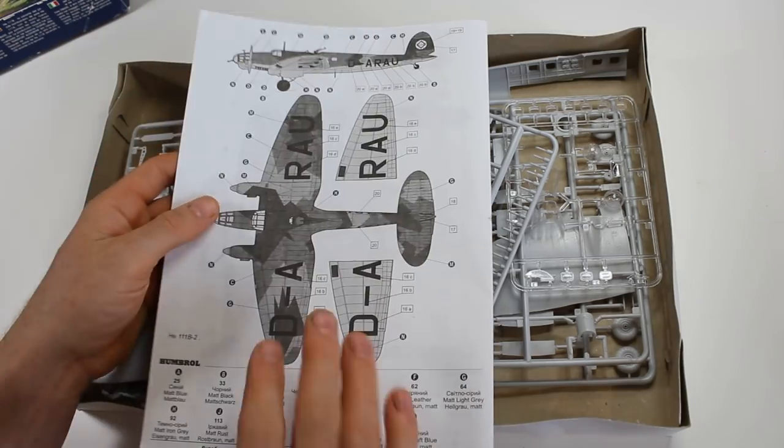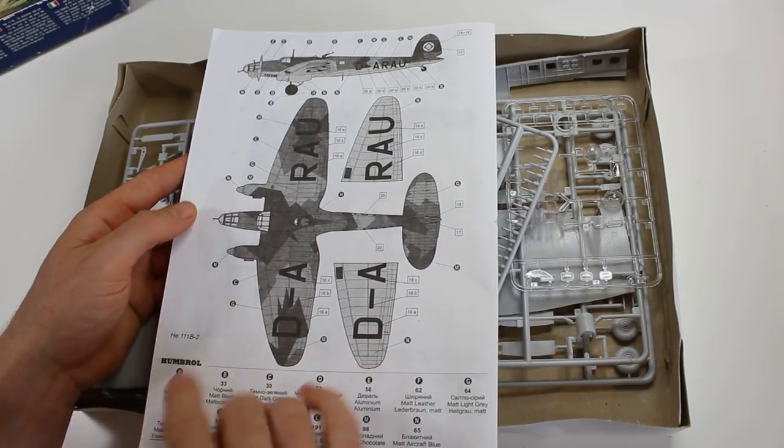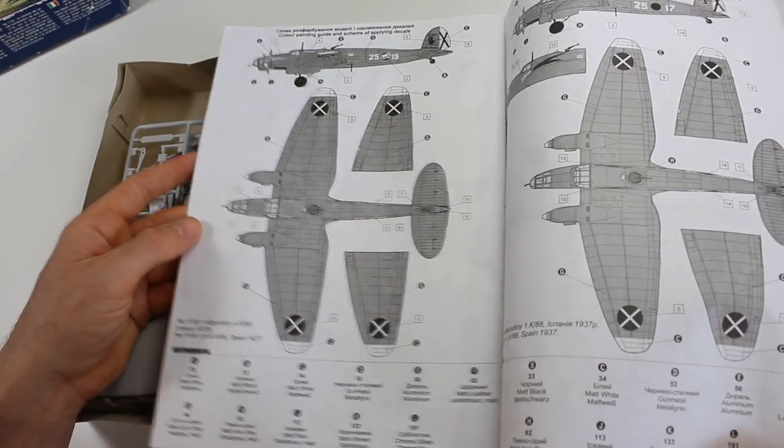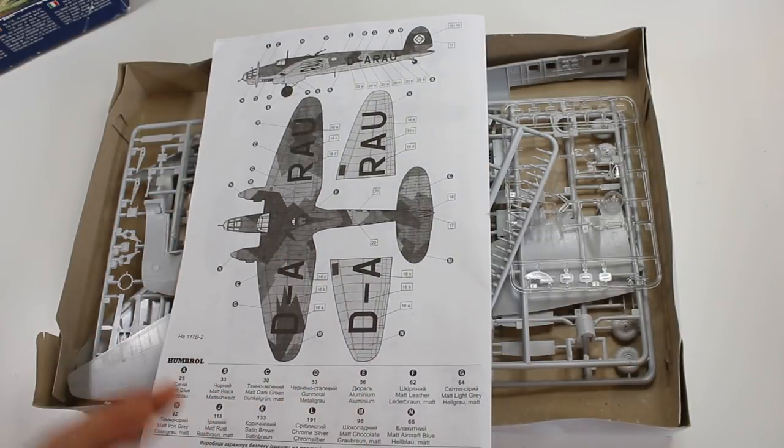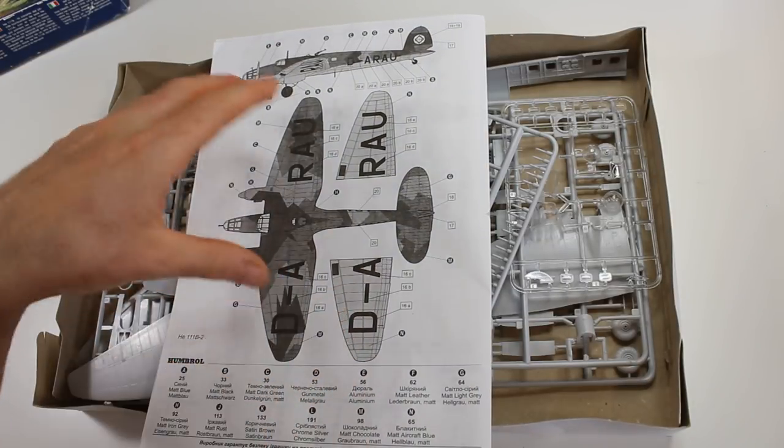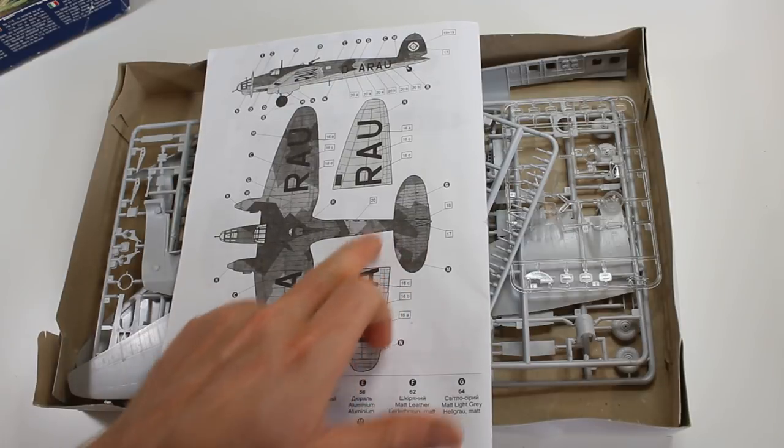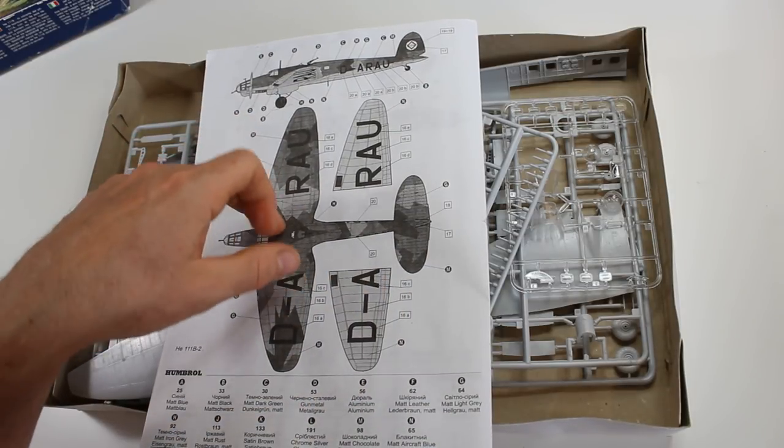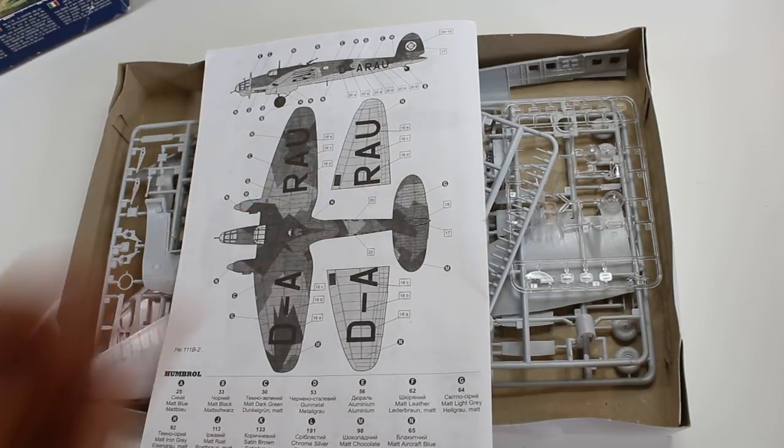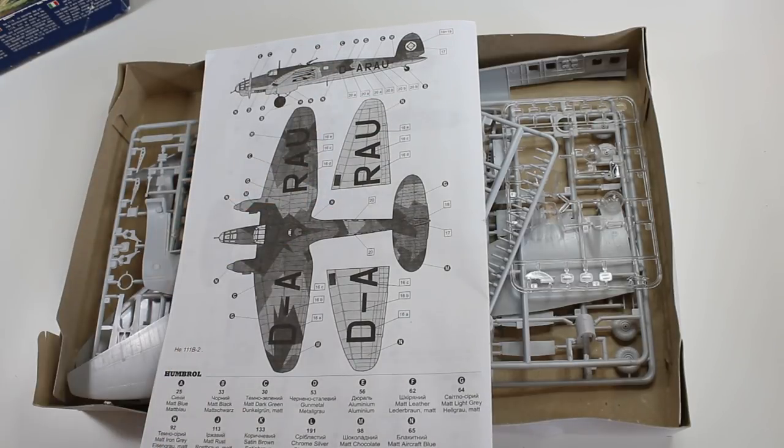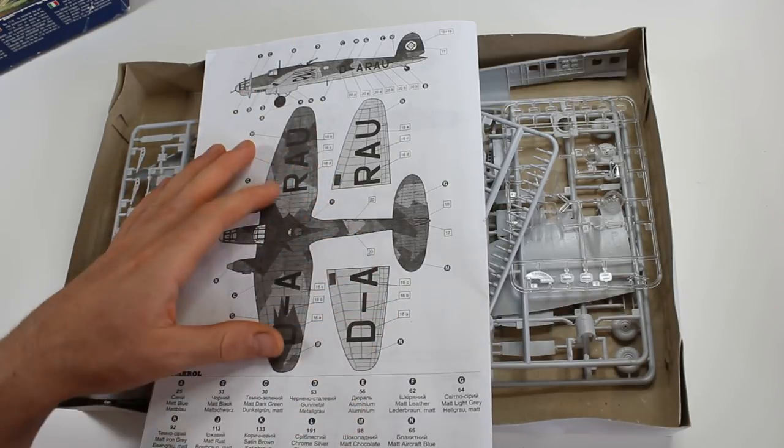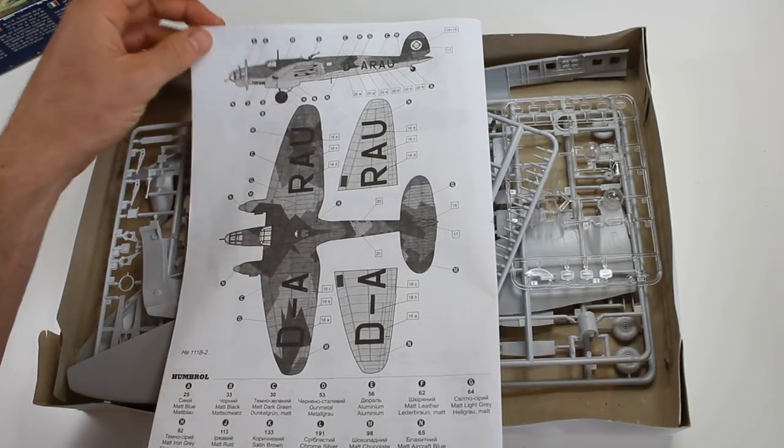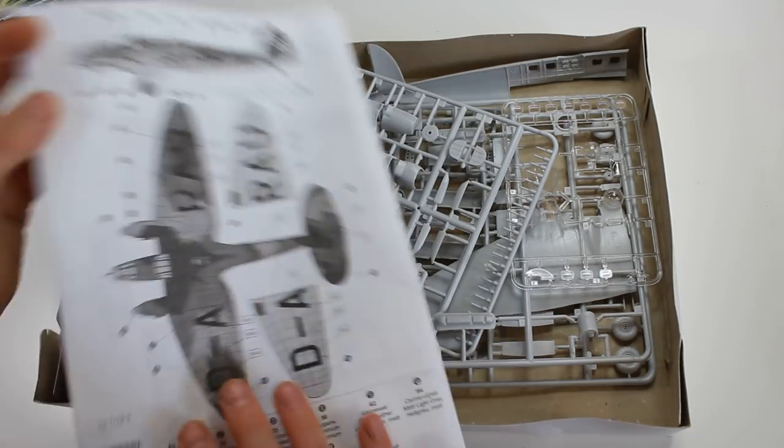So there's the instructions, and this is a B2 version, so these are B1 over here. Not a lot of differences. And this has got that splinter camouflage, which is RLM 63, 61, and 62, so it's a grey, green, and brown, with blue on the underside, which is 65. Interesting camouflage. This could have been, this is the sort of version that would have been used in Poland, so in 1939, and then they were taken off frontline use.